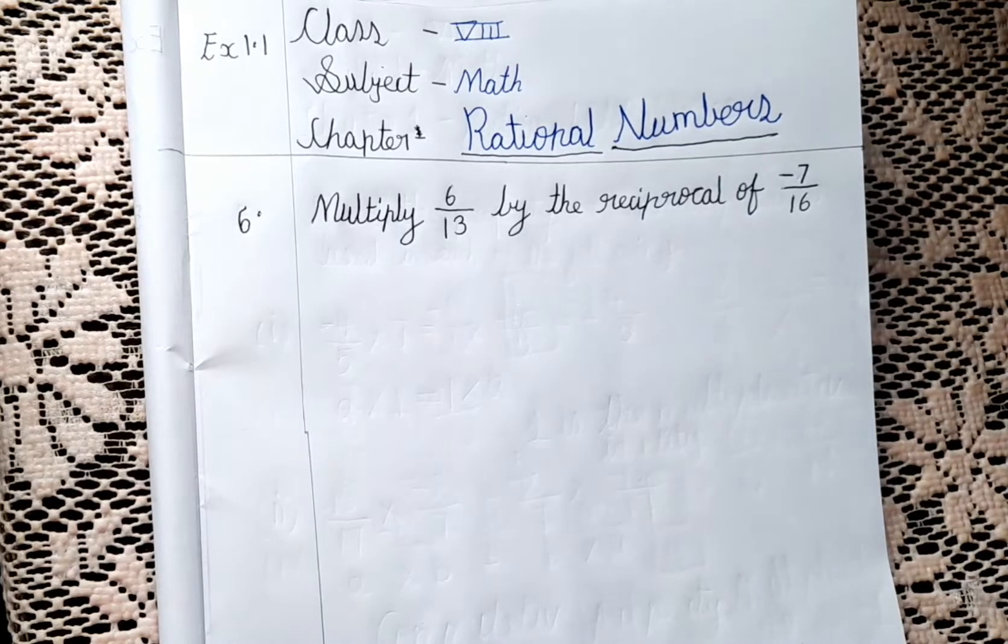So guys, let's read the question. Multiply 6 by 13 by the reciprocal of minus 7 by 16.